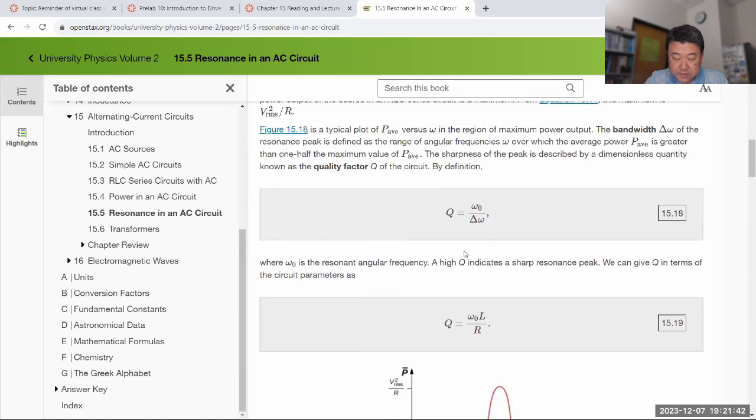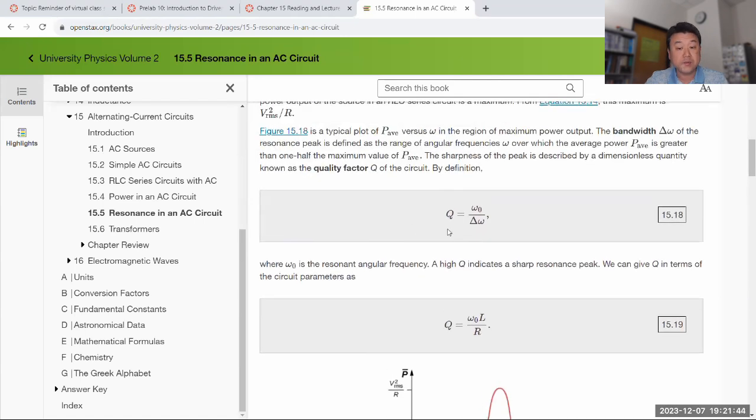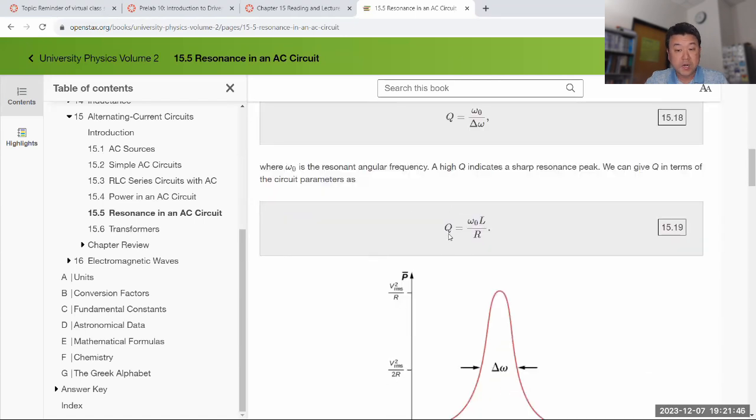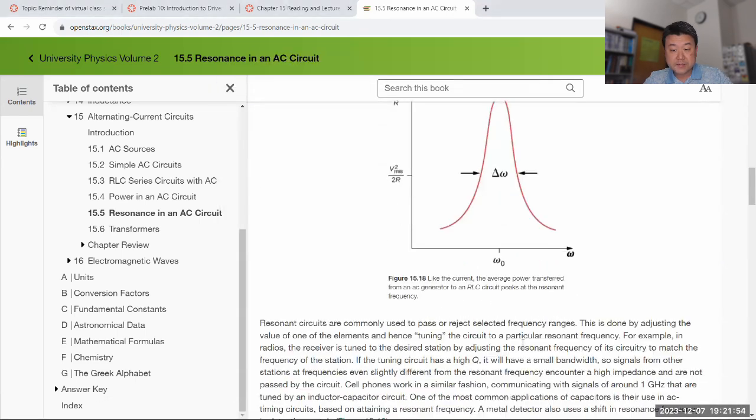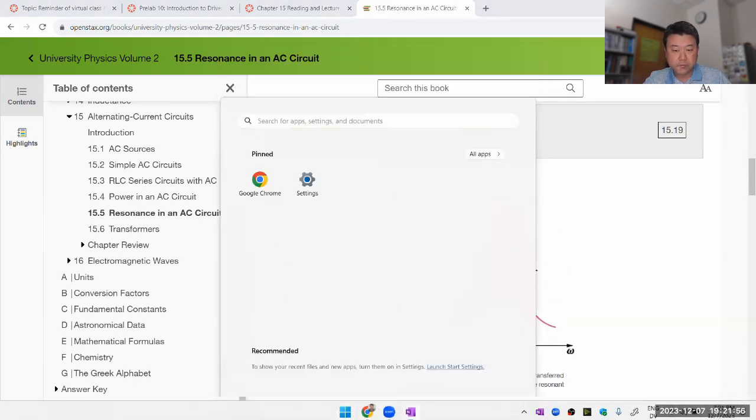They talk about the Q factor, quality factor. And you see it here, the quality factor becomes lower when the R is greater.